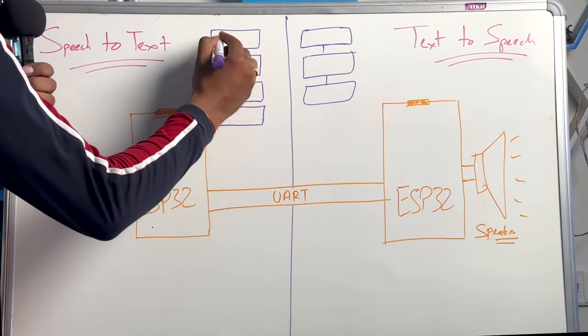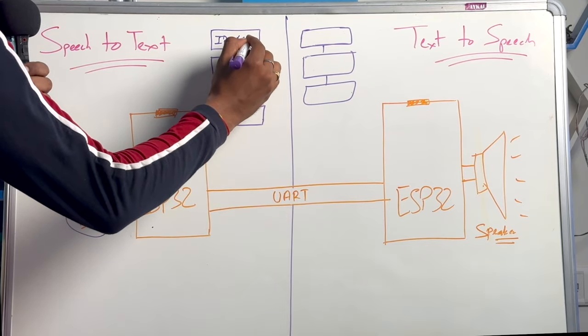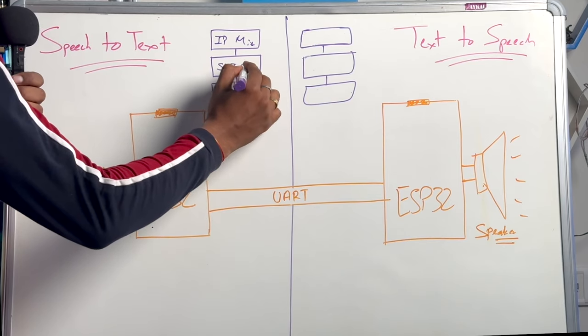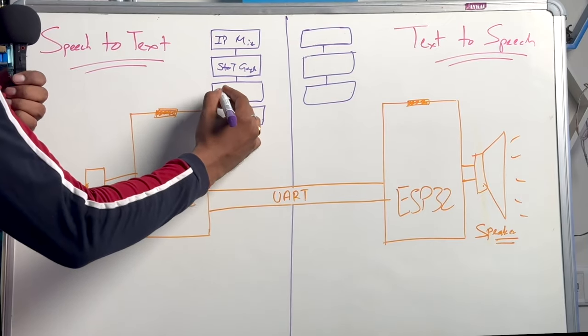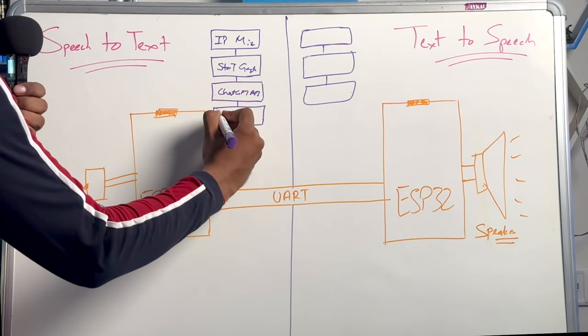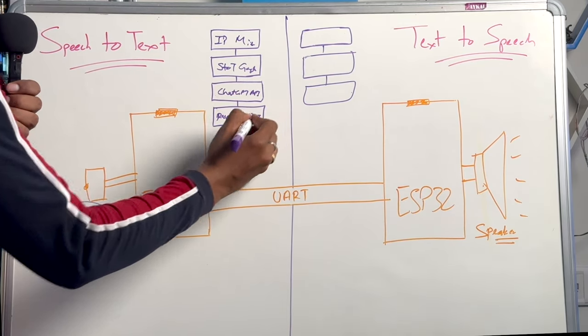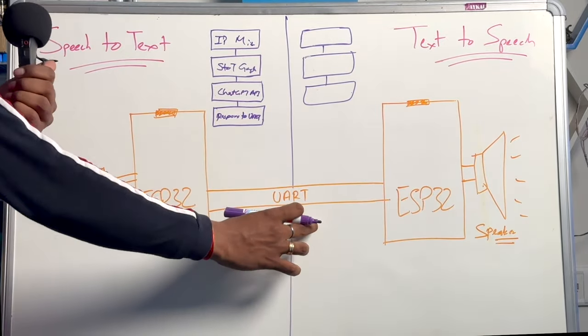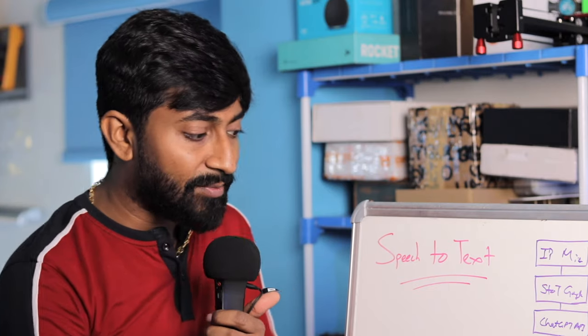On the speech-to-text ESP, first it takes input from the microphone. After taking the input, it sends the audio to Google Cloud's speech-to-text service by requesting that API. Then it gets the response — the converted text — and sends that to the ChatGPT API. After requesting the question to the ChatGPT API, it gets the answer from ChatGPT and sends that response via UART communication to the other ESP32. For those who don't know UART, it is basically serial communication — the RX/TX communication.